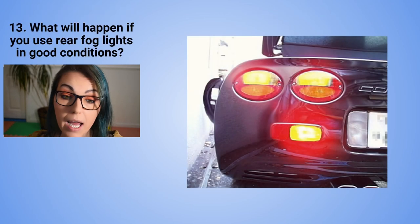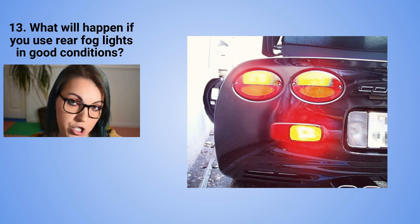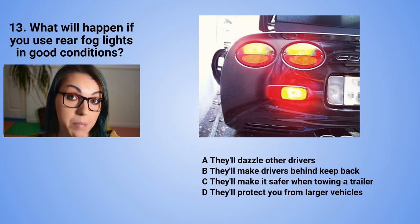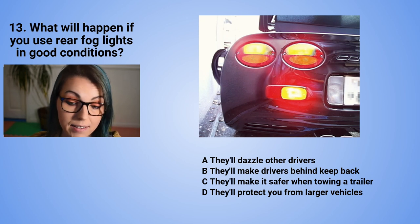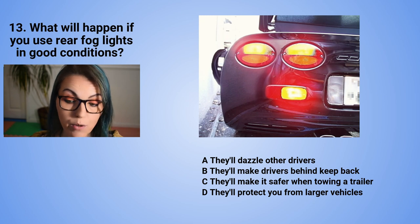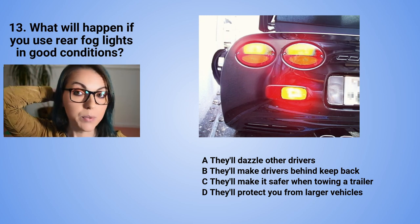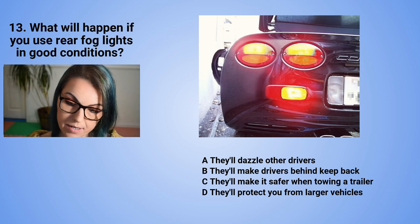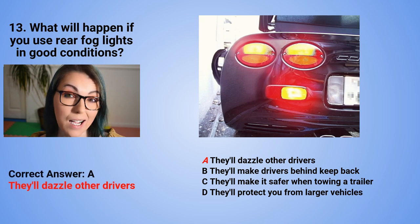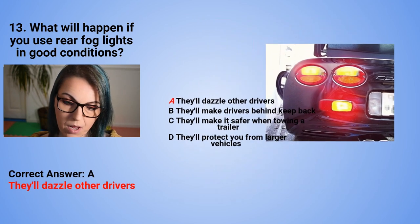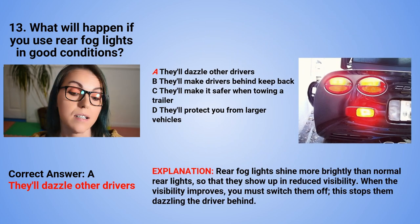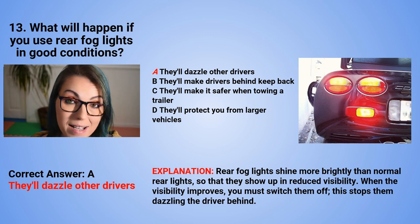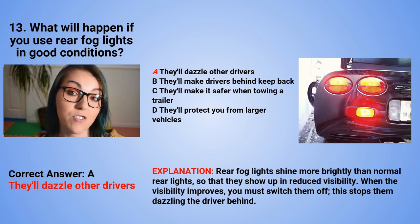Question 13: What will happen if you use rear fog lights in good conditions? A. They will dazzle other drivers. B. They will make drivers behind keep back. C. They will make it safer when towing a trailer. Or D. They will protect you from larger vehicles. The correct answer is A — they will dazzle other drivers. Rear fog lights shine more brightly than normal rear lights so they show up in reduced visibility. When visibility improves, you must switch them off to stop them dazzling the driver behind you.